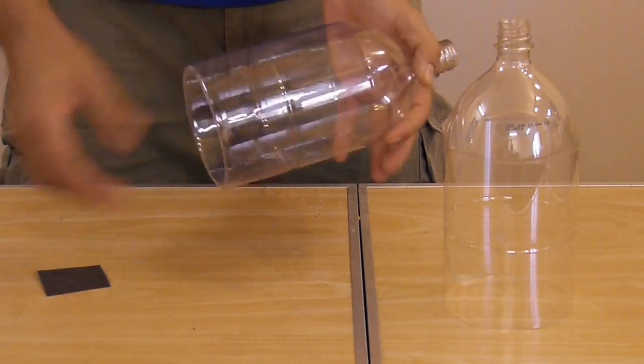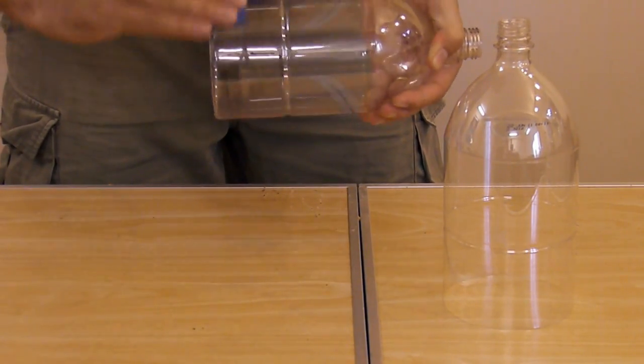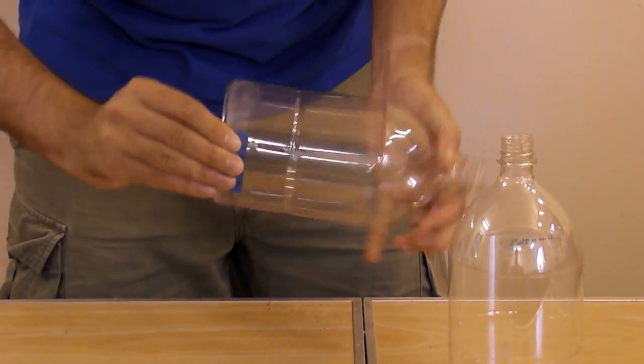Take your shrinking section and sand about two centimeters of the shrinking part with some fine sandpaper.